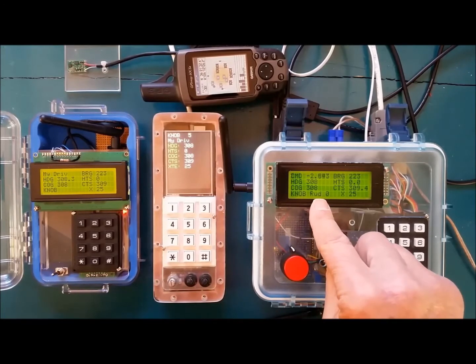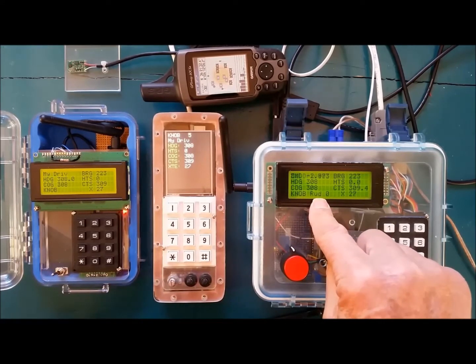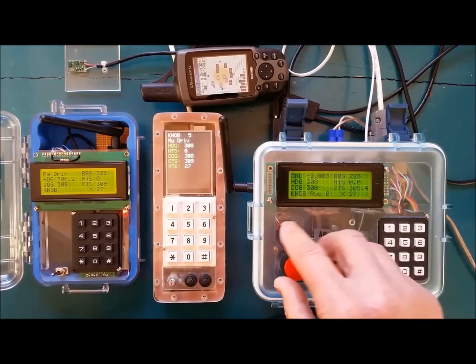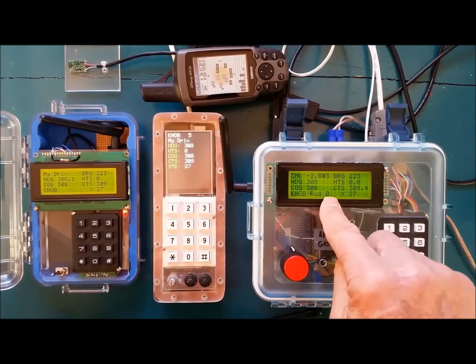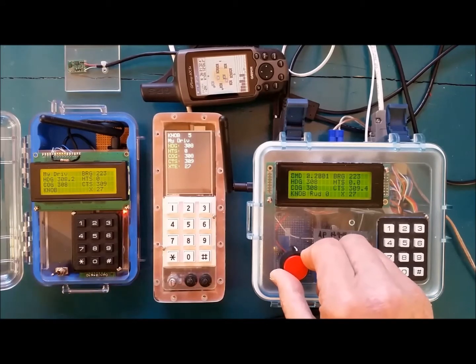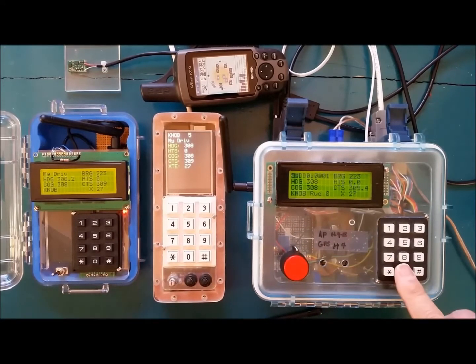Now, here I do not have the rudder feedback unit connected. I don't have one at the house. So this just says zero. But if we were on the boat, this would report what the rudder is. And so basically, in the knob modes of steering, you can steer the boat using this. So we'll go back to off.